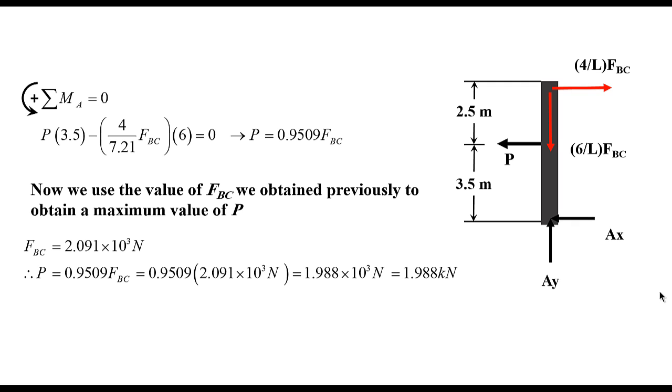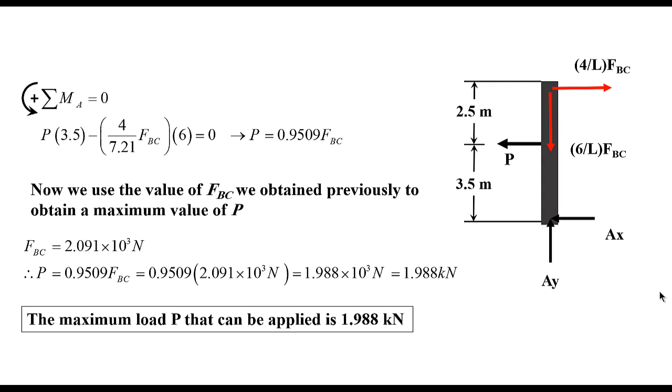So, if FBC is 2.091 times 10 to the 3 Newtons, I plug it into the equation, I will have 0.9509 times 2.091 times 10 to the 3 Newtons. That will give me 1.988 times 10 to the 3 Newtons, or simply 1.988 kN. So, the maximum load P that can be applied is 1.988 kN.